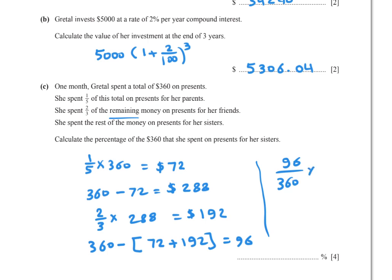Multiply by 100 equals 26.7% to three significant figures.